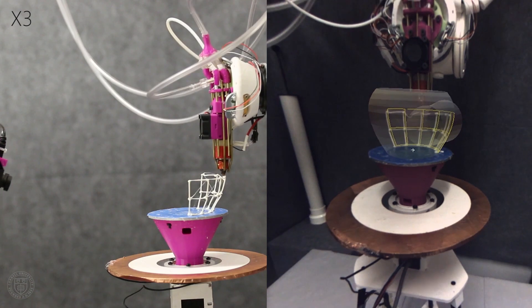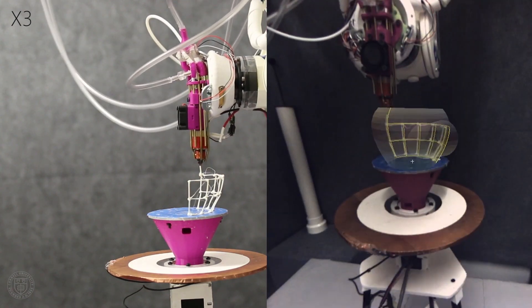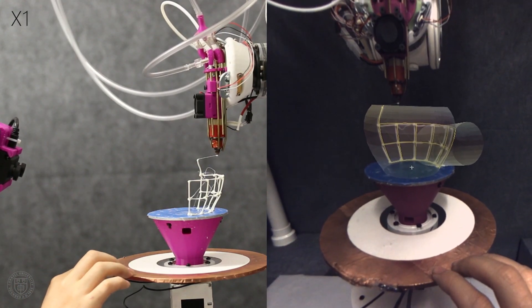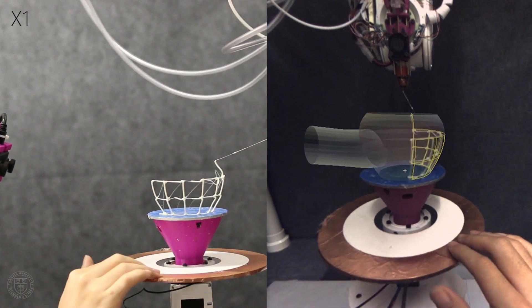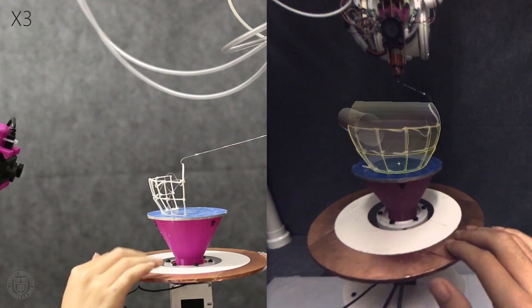Now the designer wants to create a teapot handle opposite the spout. The designer touches the printing platform to rotate the teapot. The robot retreats and parks automatically. The designer freely rotates the platform.